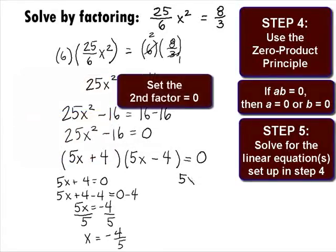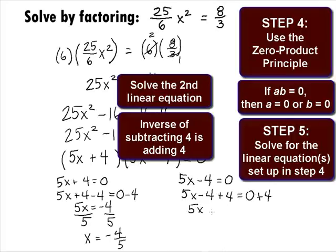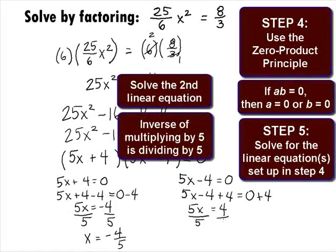Setting the second factor equal to 0, we get 5 x minus 4 equals 0. Inverse of Subtract 4 is to add 4 to both sides, which will give us 5 x minus 4 plus 4 equals 0 plus 4, which will simplify to be 5 x equals 4. And the inverse of Multiply is to divide both sides by 5, which will give us 5 x over 5 equals 4 over 5, which gives us our second solution of x equals 4 over 5.